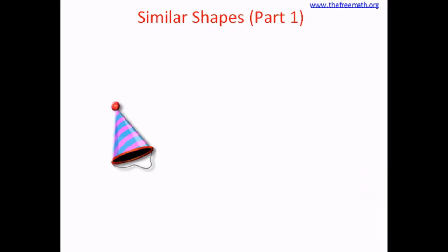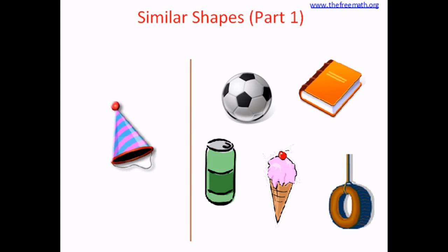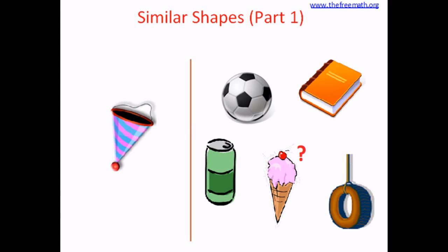The next one is a cap. What does a cap look like? Does it look like a can? No. Does it look like a book? No. Does it look like this ice cream? A little bit — I think it looks like this ice cream. But let's be really sure. Let's turn this cap upside down. So now the cap looks like this. And now if you look at the cap and the ice cream, you can see that they are similar shapes. So the ice cream and the cap look like each other. Their colors are different, but their shapes are similar.